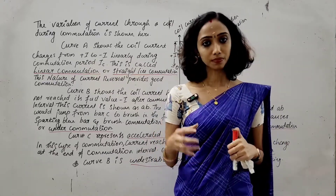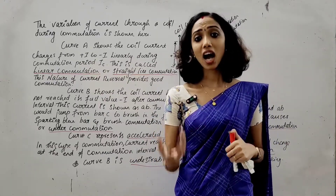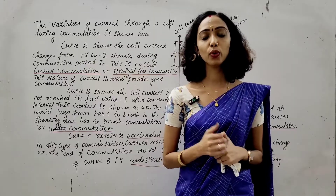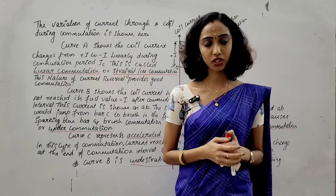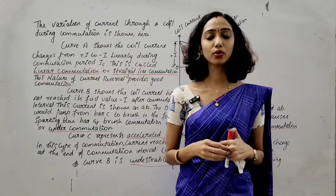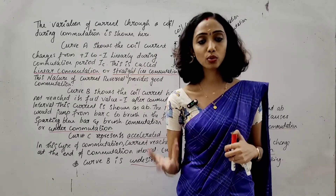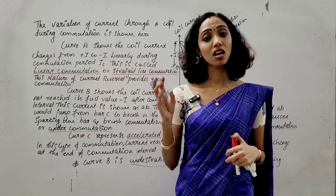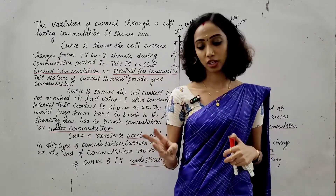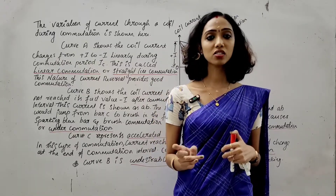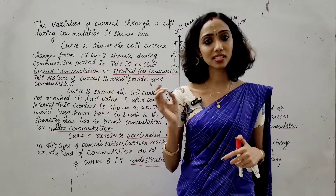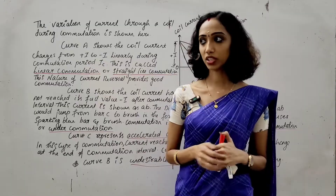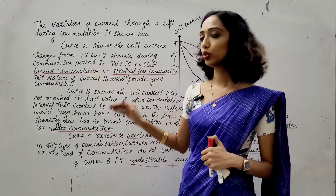How to improve commutation: the methods are voltage commutation, resistance commutation, and compensating winding commutation.